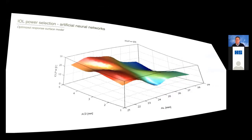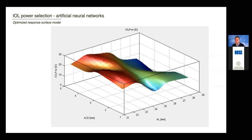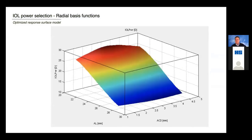During the process of evolving this, we can look at different markers for how well we're doing. This is called an optimized response surface model used in engineering. Early in the process it has a lumpy, bumpy appearance and we needed to make some improvements. As we went through different methods of using artificial intelligence, it evolved and evolved until we had an almost perfectly smooth optimized response surface model. For this, we used radial basis functions as the activation function of the artificial intelligence algorithm.